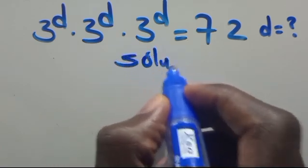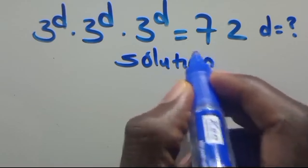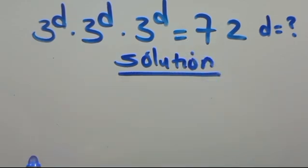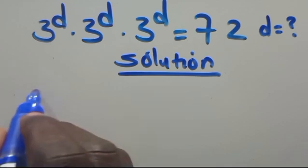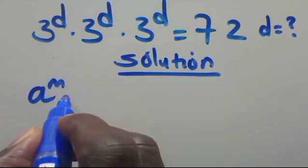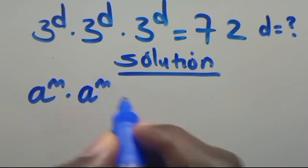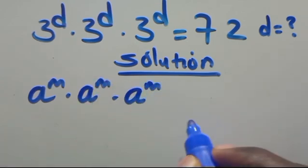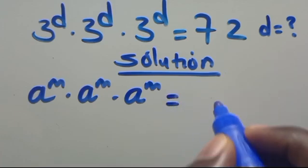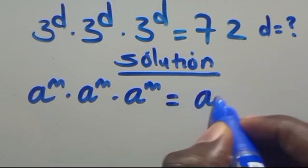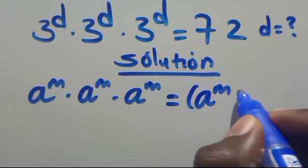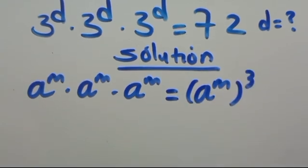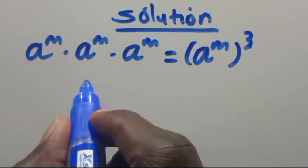Let's find the solution. Recall that when we have a to the power of M times a to the power of M times a to the power of M, this equals a to the power of M in brackets to the power of 3.